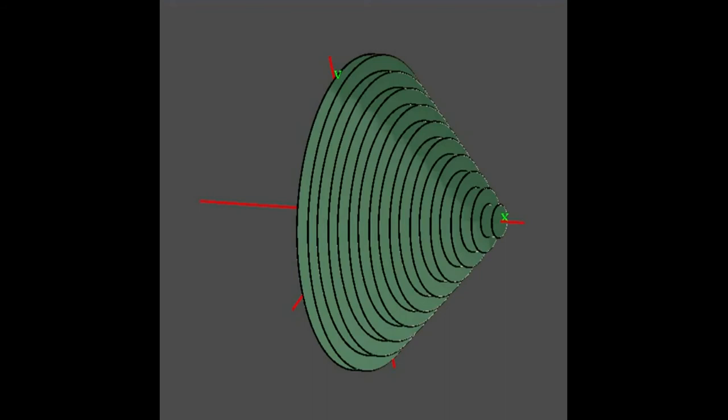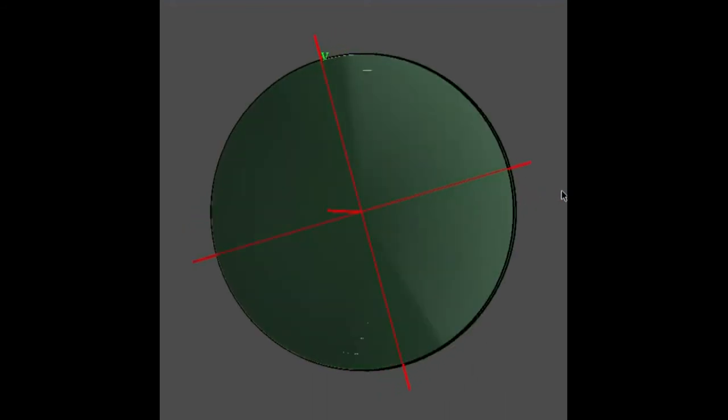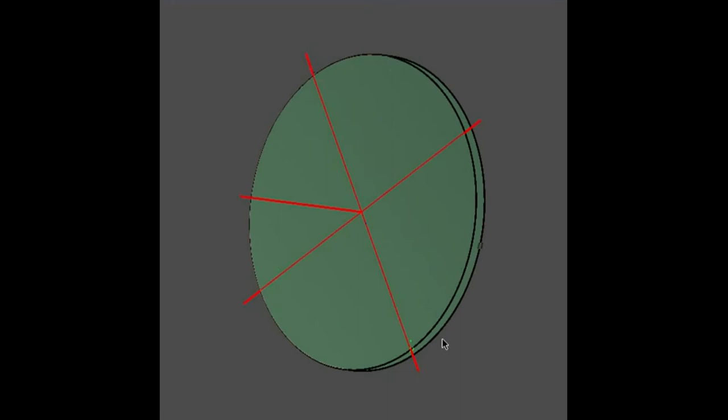We just keep doing that until we've filled up the whole space. We've got all these very thin discs stacked on top of one another, and that's going to be our approximation for the volume.